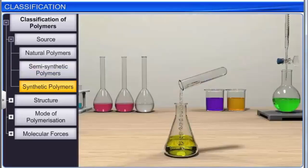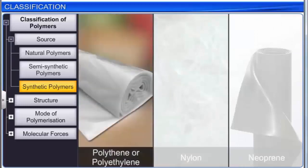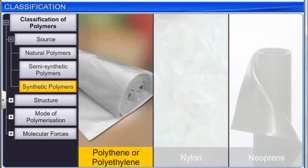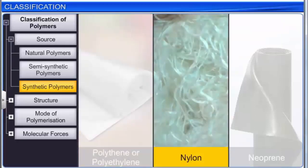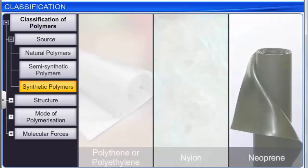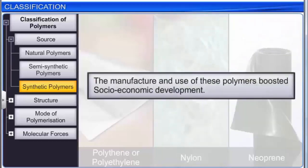Synthetic polymers are prepared in the laboratory. Examples are plastics such as polythene or polyethylene, fibers such as nylon, and synthetic rubbers such as neoprene. The manufacture and use of these polymers boosted socio-economic development.